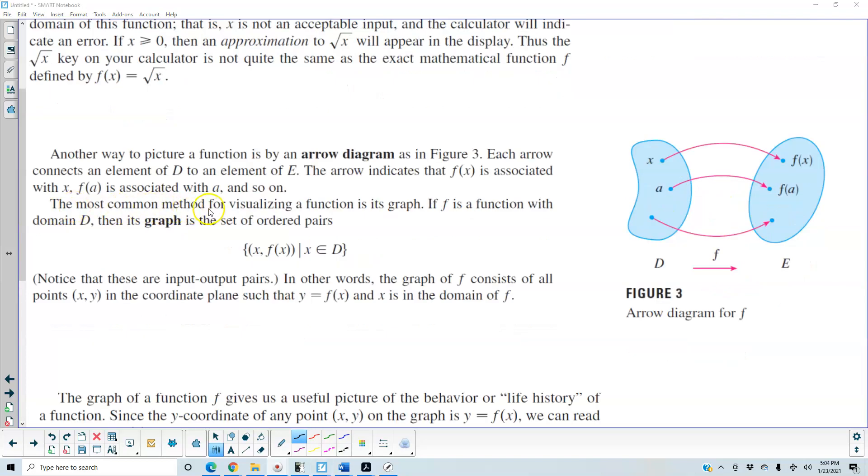Now the most common method for visualizing a function is its graph. If f is a function with domain D then its graph is a set of ordered pairs where x and f of x such that x is in a set of D. Notice that these are input output pairs. So in other words the graph of f consists of all points x, y in the coordinate plane such that y is equal to f of x and x is in the domain of f.